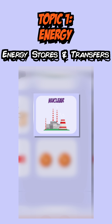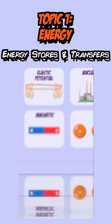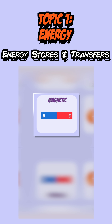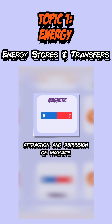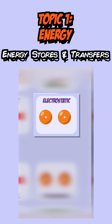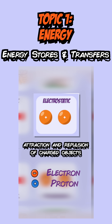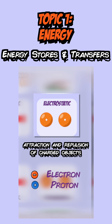Nuclear energy stores involve energy that's released during nuclear reactions. Magnetic energy stores are due to the attraction or repulsion between magnets. And finally, electrostatic energy stores are due to the attraction or repulsion between charged particles, things such as electrons and protons.